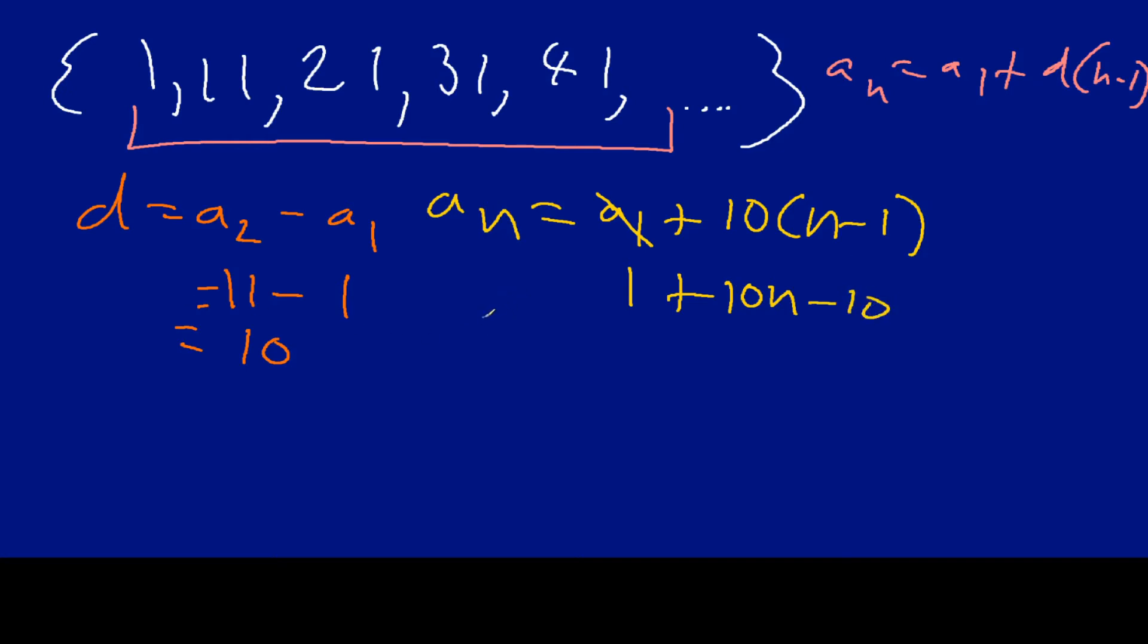And so, when we simplify this, we're going to have a sub n equals 10n minus 9, because 1 minus 10 is going to be negative 9, like so. And this right here is our formula.